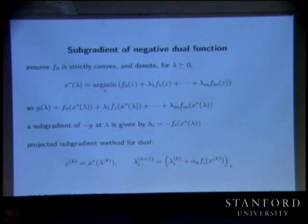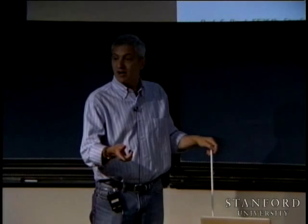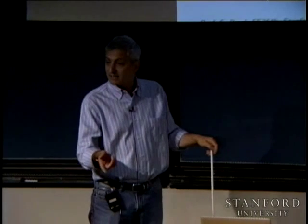The lambdas are prices or costs associated with the constraints. It's sort of a net cost — your cost plus charges and subsidies for violations.